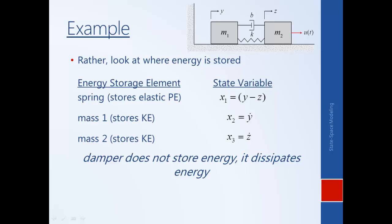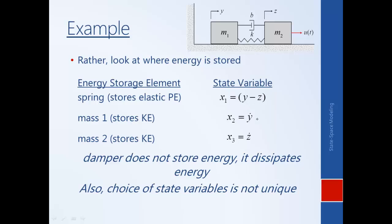So here we show how to find the minimum number of state variables in an intuitive way, giving us a sense of the notion of a dynamic system's state. Something interesting to point out is that the choice of state variables is not unique. Previously we had chosen Y, Z, Y-dot, and Z-dot. If we know Y and Z separately, we have just as much information as knowing their difference. So that set of four also captured the state — it just was more than necessary. We don't actually need to know Y and Z individually; it's enough to know their difference.